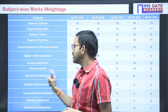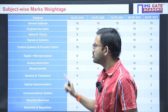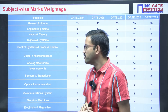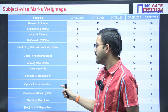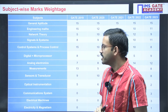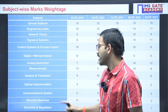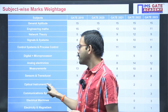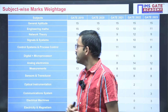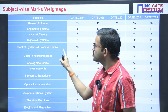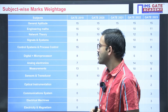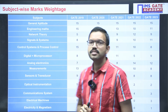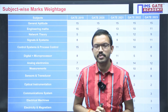Regarding measurements, around 8 marks were given. Regarding transducers, around 10 marks were given. Regarding communication, around 3 marks, machines around 4 marks, optical around 4 marks, and process control around 2 marks. This is the subject-wise analysis of GATE 2024 instrumentation paper.